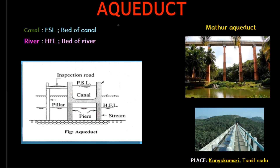First of all, let's start with a quick introduction to this video. What is the first image? Mathur Aqueduct. Where is this? We are in Tamil Nadu, in Kanyakumari district. This is from the Kamarajar era in 1969.